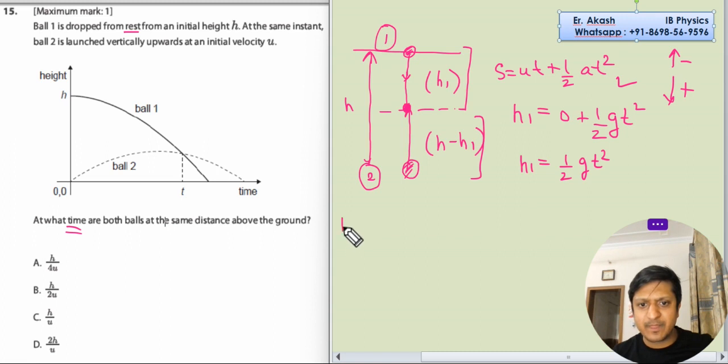h minus h1 equals ut - u and t because t is the same time where it is meeting - then minus half g t square. Why minus? Because the notation for upwards is minus.